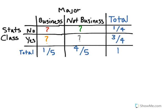Here's another example of a probability table that's a little more complicated. We're looking at different majors—I just divided it into business and not business—and whether or not people have taken a stats class before, yes or no. These total numbers that I have filled in, I just chose randomly.